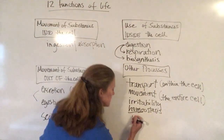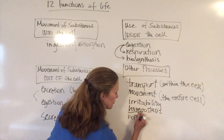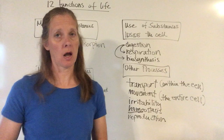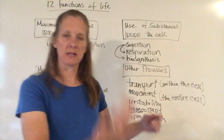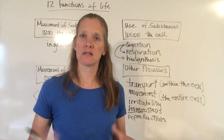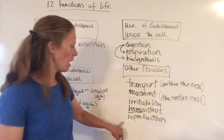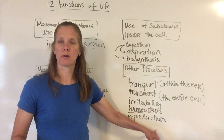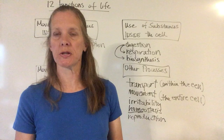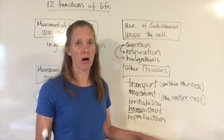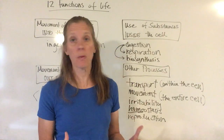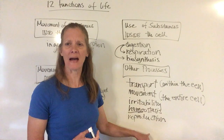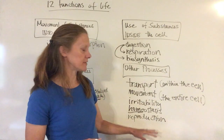Finally, the cell has to engage in reproduction. Just like us, cells don't live forever. To continue the existence of the line, reproduction is necessary. Cells will divide and make new cells from old cells. That's part of the cell theory — all cells arise from living cells; they don't just pop out of nowhere. Reproduction is the last of the 12 functions of life that a cell has to perform.